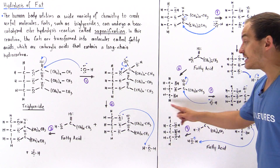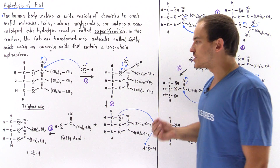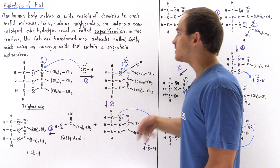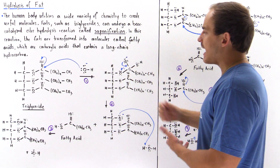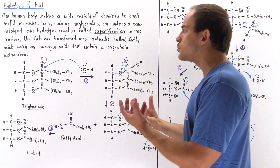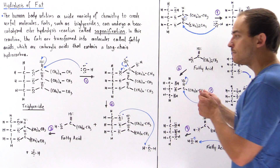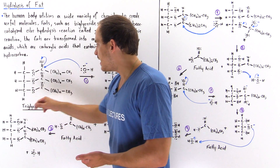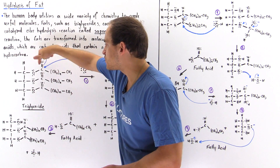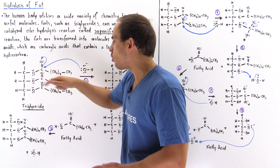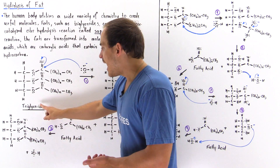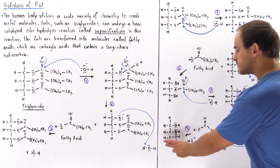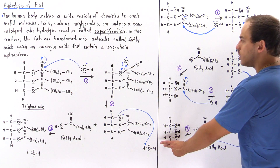Glycerol is formed along with three molecules of fatty acid when one triglyceride is hydrolyzed via the reaction known as saponification. Saponification is the production of fatty acids and glycerol from a triglyceride molecule. The 'tri' means three groups that form the carboxylic acids, and 'glyceride' refers to the three-carbon backbone that becomes the glycerol molecule.